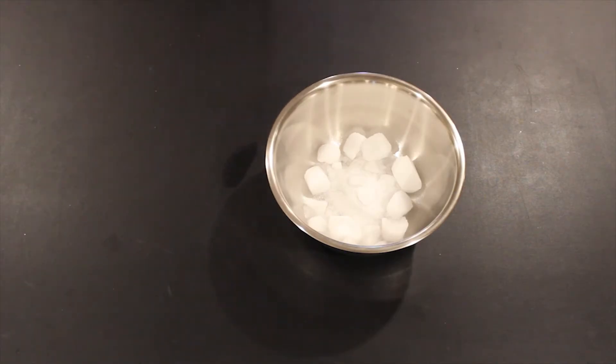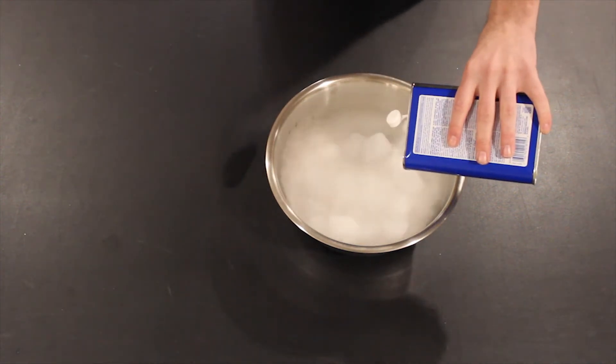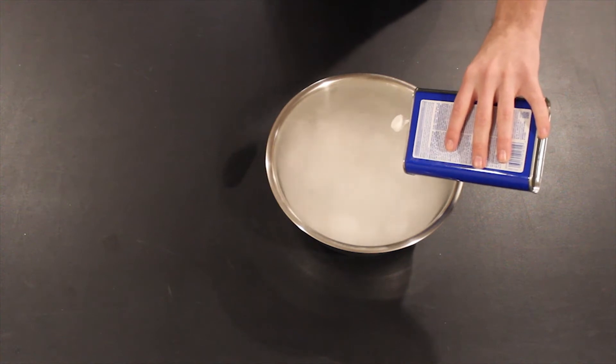Now that we've crushed the dry ice we can add some acetone to the bowl. I added enough so that there was about an inch of acetone in the bowl but you can add as much as you need to.